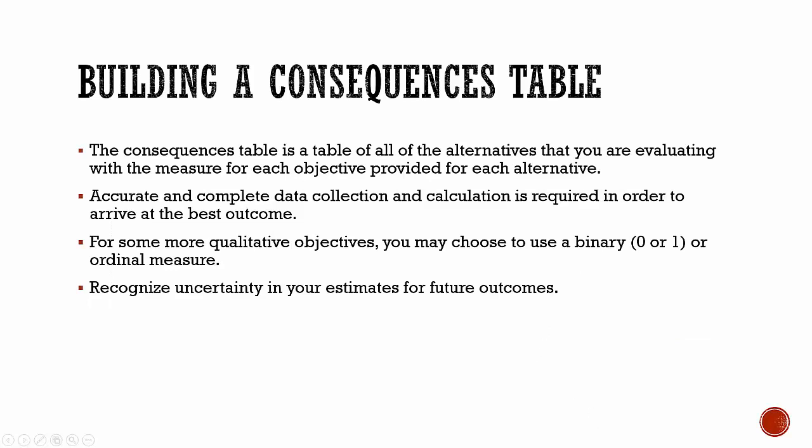The consequences table is a table of all the alternatives that you are evaluating, with the measure for each objective provided for each alternative.